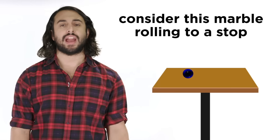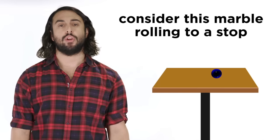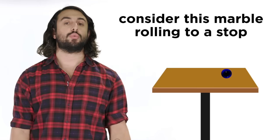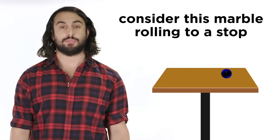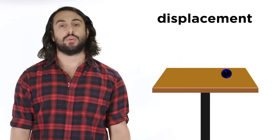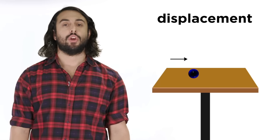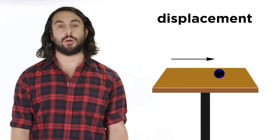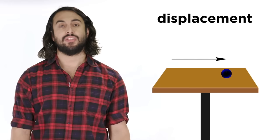Before we finish, let's look at a moving object like this marble rolling to a stop, and visualize all three of these vectors as the object moves. First with displacement, this vector will just elongate as the marble rolls, and will span the distance traveled.